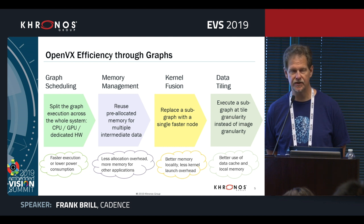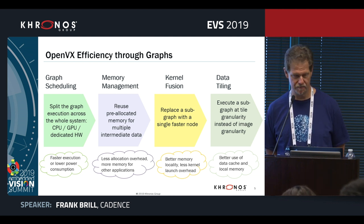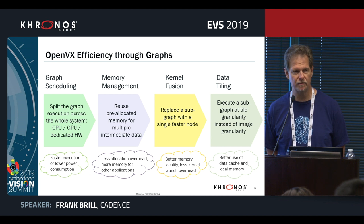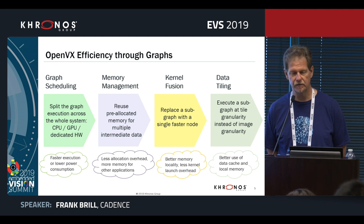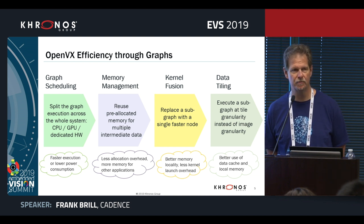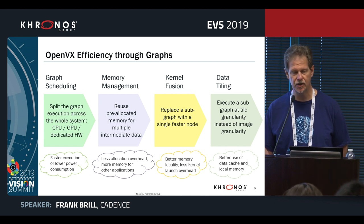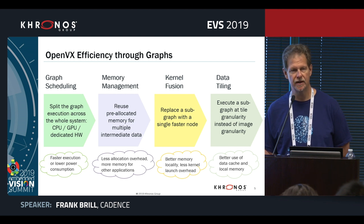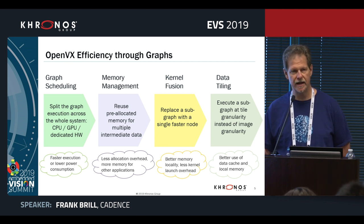An important technique is data tiling. Modern computer architectures have a memory hierarchy: larger, slower memories that can hold entire images, and smaller, faster local memories. Instead of running each kernel over the entire image — which has poor cache performance — you tile the image, doing multiple operations on each piece before moving to the next. This maximizes compute per data brought into local memory, minimizing the overhead of accessing slower memory.